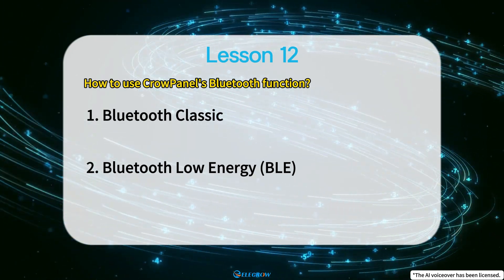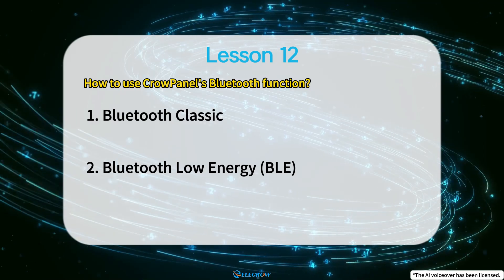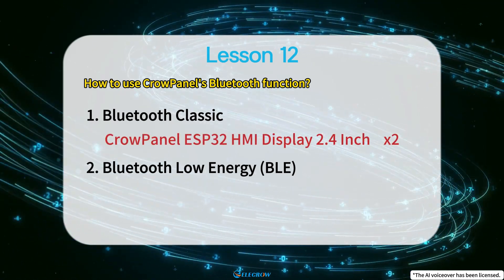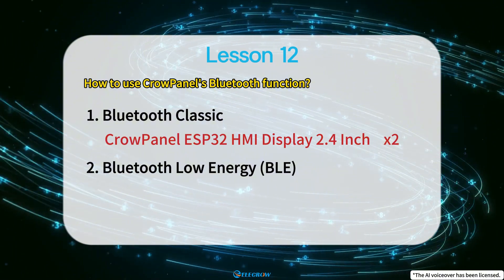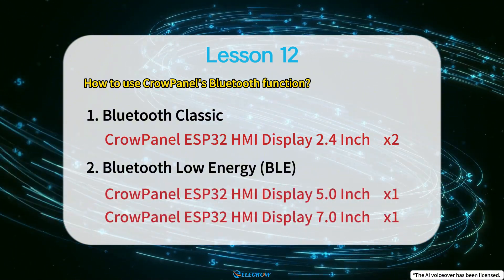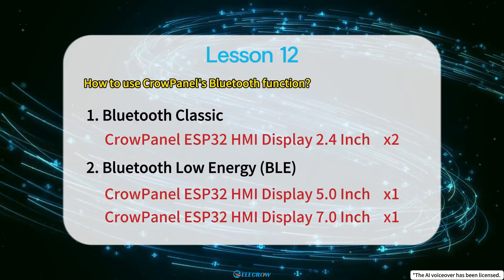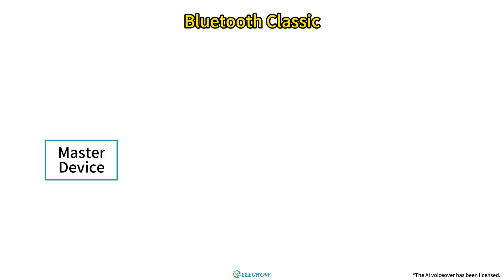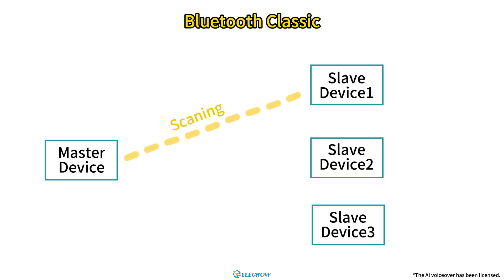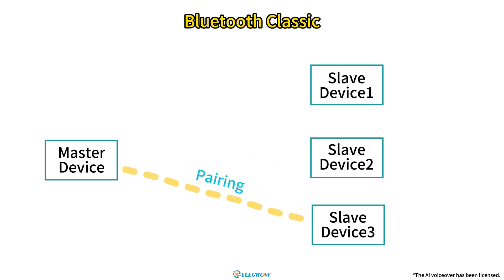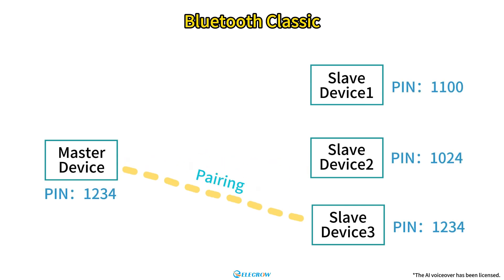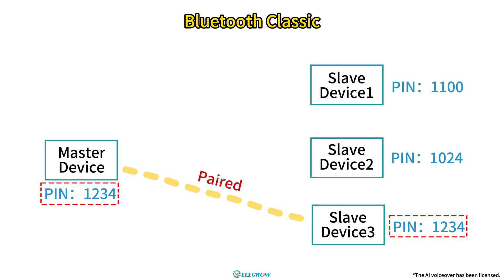Since the ESP32-S3 chip doesn't support Bluetooth Classic, I use two 2.4-inch Cropanels to demonstrate Bluetooth Classic, and then utilize a 5-inch Cropanel and a 7-inch Cropanel for the BLE demonstration. In Bluetooth Classic, devices are classified as Master and Slave. The Master device actively initiates the pairing process. Once it finds the specified slave device, it will verify the slave's PIN code. Only when the PIN codes match can the pairing be completed, allowing communication to proceed.